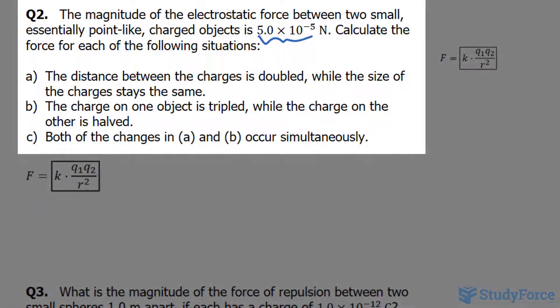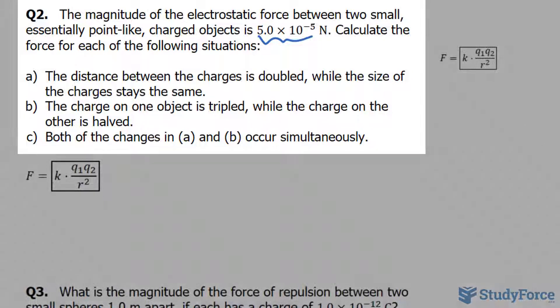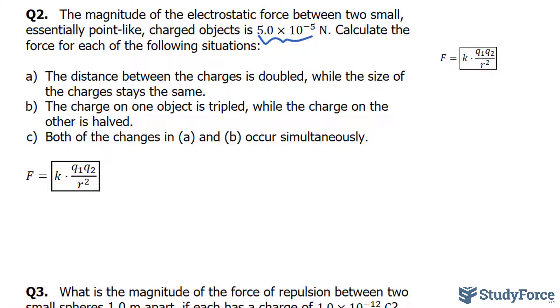So again question 2 reads, the magnitude of the electrostatic force between two small essentially point-like charged objects is 5.0 times 10 to the power of negative 5 newtons. Calculate the force for each of the following situations. For question B, the charge on one object is tripled while the charge on the other object is halved.